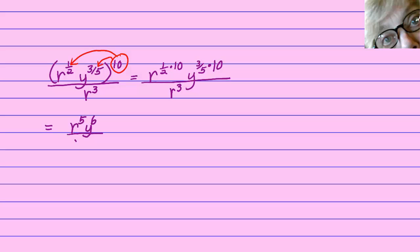So we'll have r to the five times y to the sixth over r to the third. Now here's the tricky part.